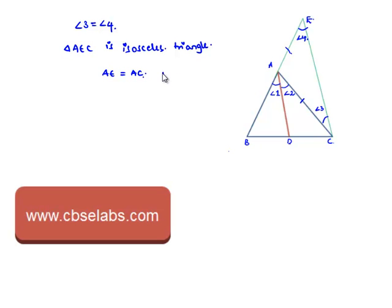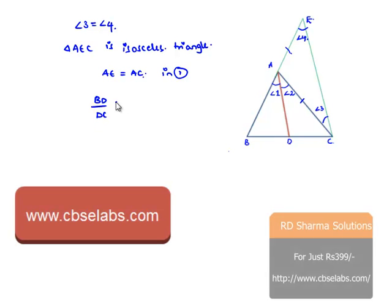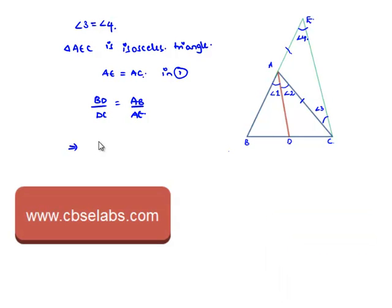Let us substitute this relation in equation number 1, that is, BD by DC is equal to AB by AE. Now, instead of AE, we can write AC, which implies BD by DC is equal to AB by AC. This is the required proof and it is hence proved.